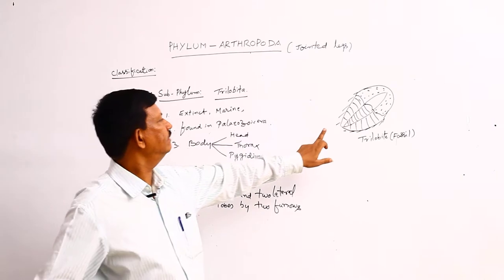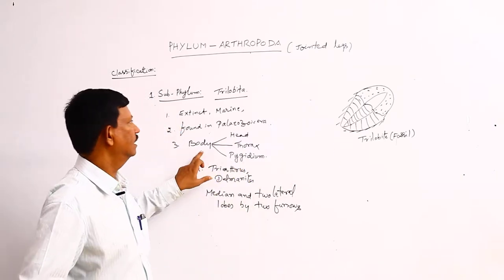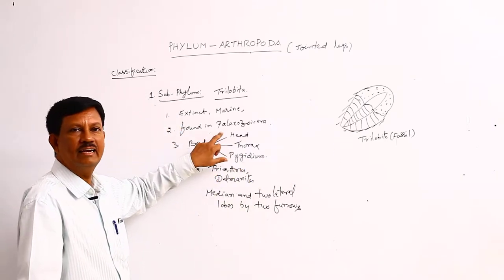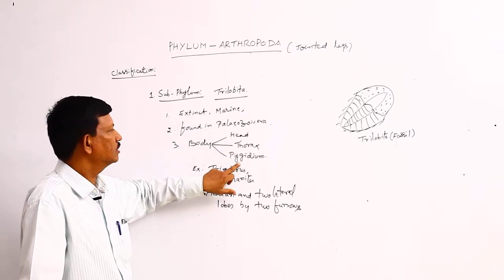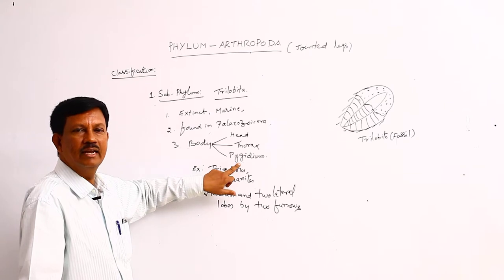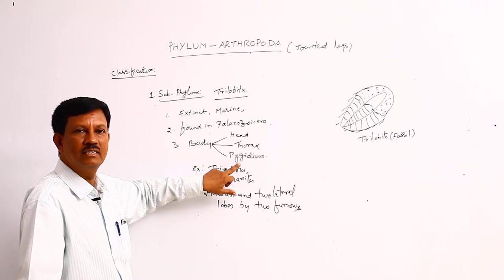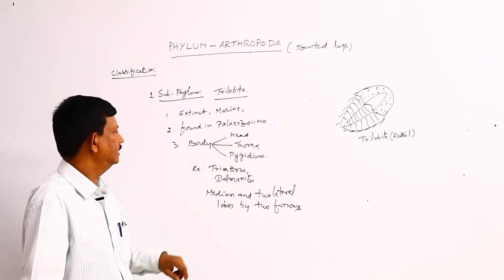The body is mainly divided into three parts. The head is present at the anterior region, the middle part is known as the thorax, and the last part is known as the pygidium. These three parts are head, thorax, and pygidium.